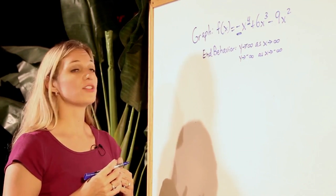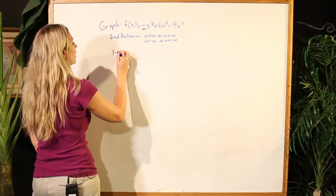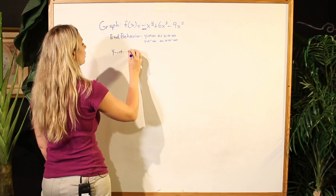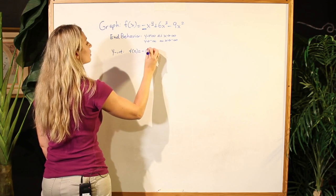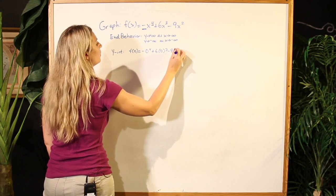Let's go ahead and move away from the ends and towards the intercepts now. In order to find a y-intercept, we may substitute in 0 for our x in order to solve for the y.